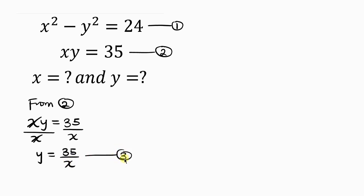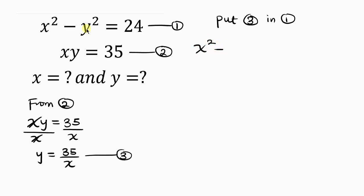Our next step will be to substitute equation 3 into equation 1. That means wherever we see y in equation 1, we substitute 35 over x. So we have: x squared minus (35 over x), and this is raised to a power of 2.